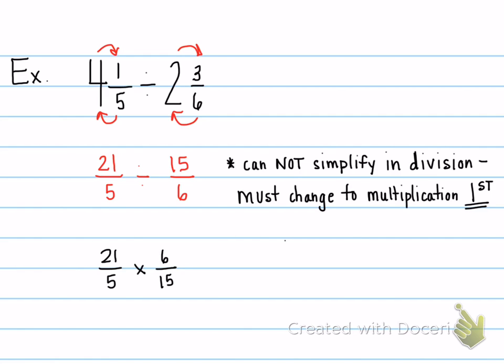Now we're looking to simplify. So I look at my 5 and 6. There's nothing I can do. I look at 21 and 15 and I know that 3 goes into both of them. 3 goes into 21 seven times. 3 goes into 15 five times. I check my ups and downs.